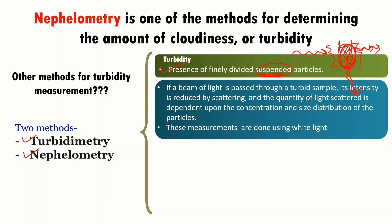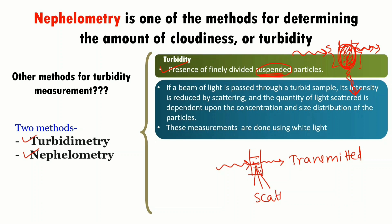If you look through this solution where the particles are present, I am passing a light through this solution. Some of the light comes out as such — I call this the transmitted light. The light which has interacted has scattered because of the particles which came in its path of movement.